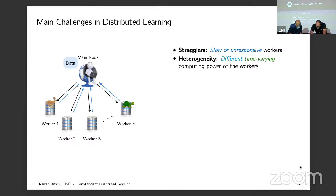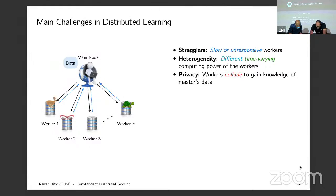Another problem is heterogeneity and time-varying behavior — some workers are slow, some are fast, and that can change over time. There's also the problem of privacy: the main node distributes data to workers, so if the data is private that's a concern. And there's security: what if some workers are malicious and deliberately corrupt the computation? This slide is a zoom-out picture of the main challenges I'm interested in, and that many works in distributed computing focus on.